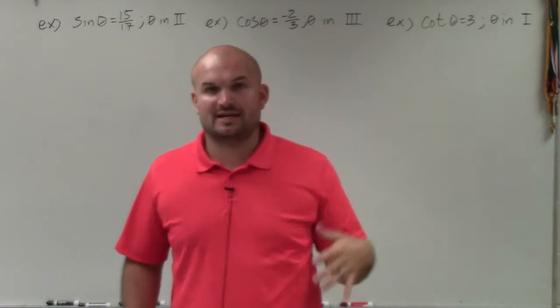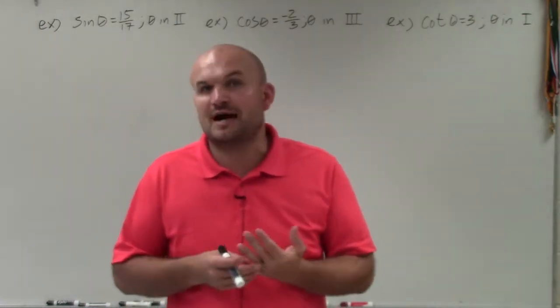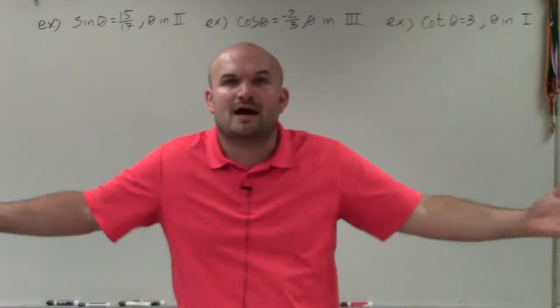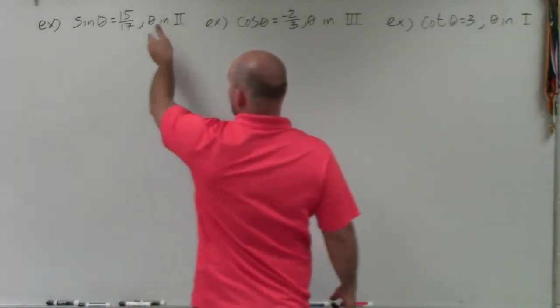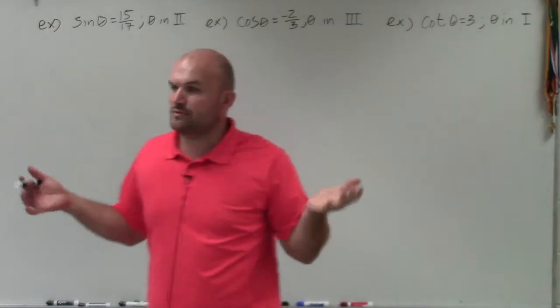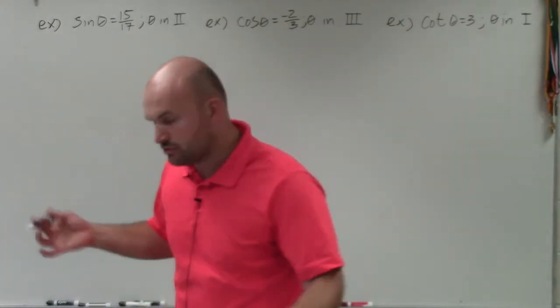So the first important thing is, in my previous video, I showed you how to evaluate for the double angle when given a right triangle and given the values of the right triangle. Well here, we're given what sine of theta equals and we're given a constraint, but we don't know what the rest of the values are for the triangle.